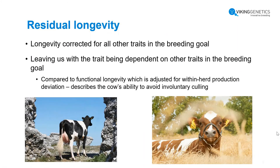Together with other work packages, we have discussed a lot about longevity, and we also saw a great presentation today on that topic. Longevity is something we should include, and maybe residual longevity could be the answer. That would be longevity corrected for all other traits in the breeding goal, leaving a trait that is independent of the other traits — compared to the more commonly used functional longevity in Gentor countries, which is adjusted for within-herd production and more describes the cow's ability to avoid involuntary culling.